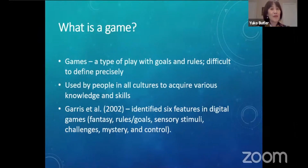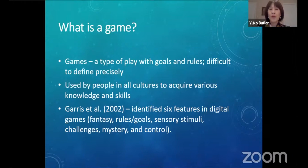So what is a game, first of all? Games can be defined as a type of play with goals and rules, but it's kind of difficult to define in a precise fashion. Games can be used by old people in all cultures to acquire various knowledge and skills. When it comes to digital games, Garis and his colleagues identified six features: fantasy, rules and goals, sensory stimuli, challenges, mystery, and control.